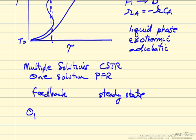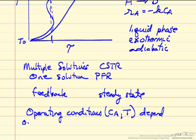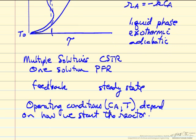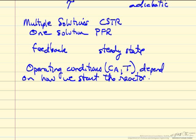But the actual operating conditions, and by operating conditions I mean the concentration of the exit, the temperature of the exit, the operating conditions depend on how we start the reactor. We could start with a low temperature in the reactor, we could start with pure reactant, or we could start with 90% product, or we could start with a high temperature in the reactor. Depending on where we start is going to determine where we end up.